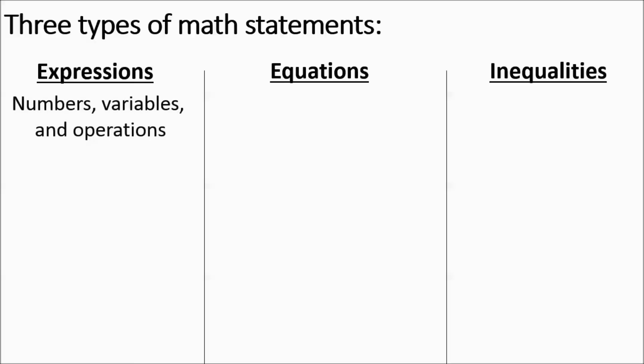Expressions are numbers, variables, and operations. If you have 5 times 2, that's an expression. There's no variables in that, but it's still an expression. 4a plus 9 would be an expression. 2 fifths minus 9, that's also an expression.